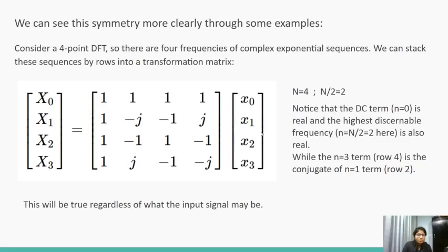We can see the symmetry more clearly through some examples. Consider a 4 point DFT, so there are 4 frequency components. We can stack these sequences by rows into a transformation matrix, same as the matrix shown earlier. Here, capital N is equal to 4, and capital N by 2 is equal to 2.